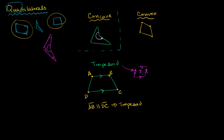Depending on the definition, a shape with two pairs of parallel sides may or may not be a trapezoid. If you say exactly one pair of parallel sides, then a shape with two pairs is not a trapezoid. If you say at least one pair, then it is. But there is a name for a quadrilateral with two pairs of parallel sides regardless of your definition of trapezoid — you are dealing with a parallelogram.